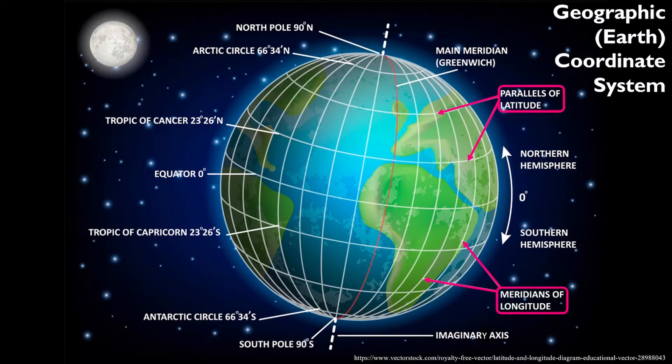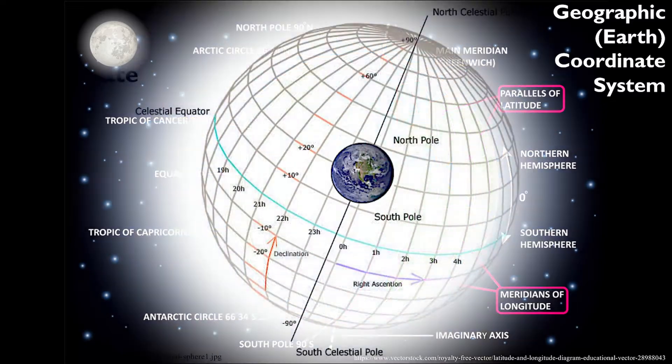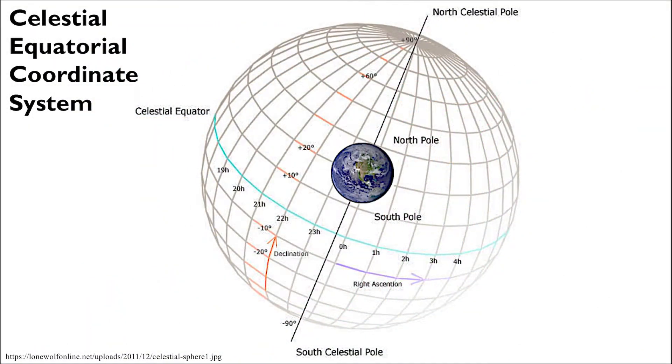If we were to expand the parallels and meridians of the geographic coordinate system and superimpose them onto the night sky, we will have basically shrunk the Earth into the center of a giant imaginary arbitrary sphere centered around the Earth. This is the celestial sphere.